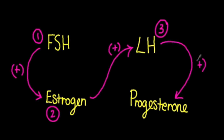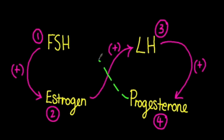The corpus luteum, that temporary endocrine structure, then secreted progesterone, so progesterone levels increased. The role of progesterone was to maintain the endometrium in preparation for fertilization. If fertilization doesn't happen, the corpus luteum disintegrates, progesterone levels decrease, and FSH subsequently increases as a result of negative feedback, restarting the cycle.